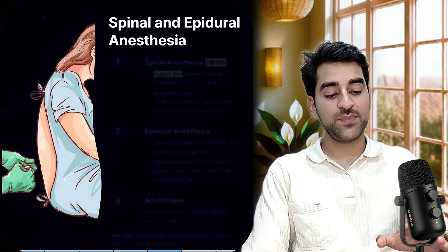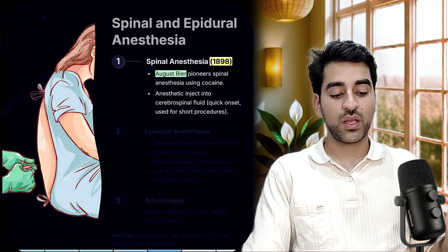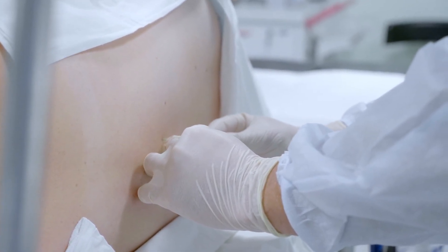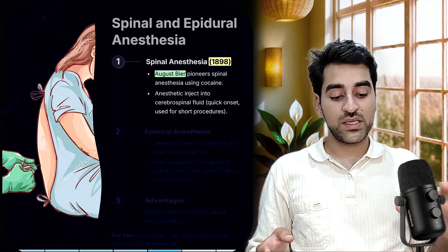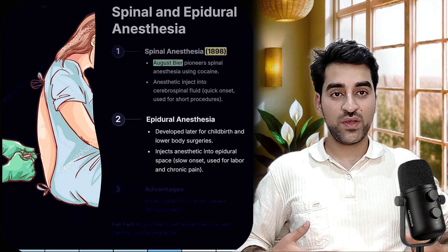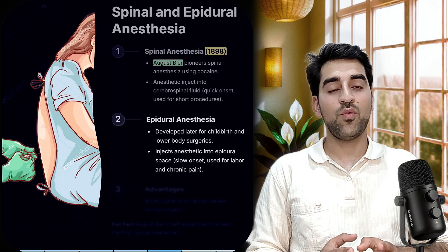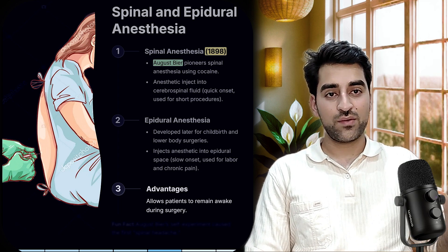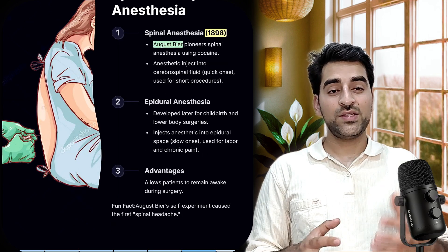In 1898, August Bier pioneered spinal anesthesia. He injected a local anesthetic into the cerebrospinal fluid, achieving quick onset, suitable for short procedures. This was a self-experiment, and afterward he developed severe spinal headache. Epidural anesthesia was developed later for childbirth and lower body surgery. The advantage was that the patient could remain awake, reducing the need for general anesthesia.